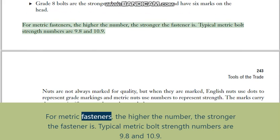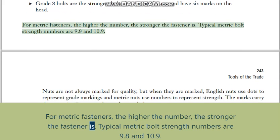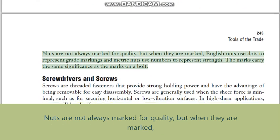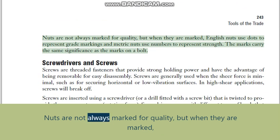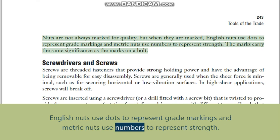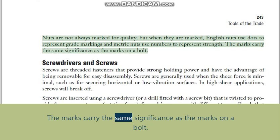For metric fasteners, the higher the number, the stronger the fastener. Typical metric bolt strength numbers are 9.8 and 10.9. Nuts are not always marked for quality, but when they are marked, English nuts use dots to represent grade markings and metric nuts use numbers to represent strength. The marks carry the same significance as the marks on a bolt.